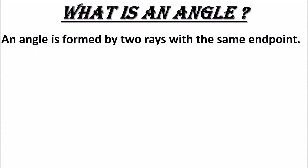An angle is formed by two rays with the same end point. Here we have a ray, and point A is called the end point of that ray. We will take one more point on this ray — say it is B. So it is ray AB, and point A is called the end point of ray AB. It is also called the origin of a ray, or the fixed point of a ray.